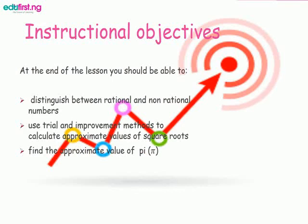This is our instructional objective. At the end of the lesson, you should be able to distinguish between rational and non-rational numbers. You should be able to use trial and improvement methods to calculate approximate values of square roots. You should be able to find the approximate value of pi.